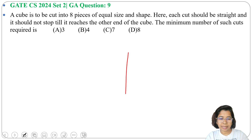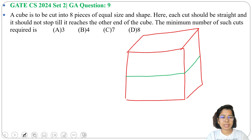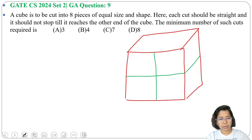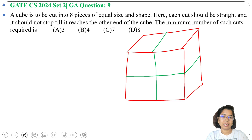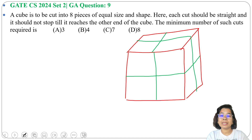Let this be a cube. First cut we can do like this — after this cut it divides the cube into 2 pieces. Next, we do another cut like this — after this the cube becomes 4 pieces. Now we have 4 pieces, so we do a cut like this — after this cut we get 8 pieces. So how many cuts did we do? We did a total of 3 cuts to get 8 pieces.